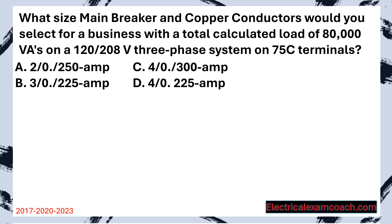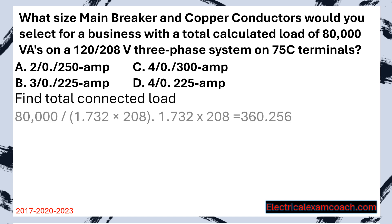What size main breaker and copper conductors would you select for a business with a total calculated load of 80,000 VAs on a 120-208 three-phase system on 75 degrees C terminals? Step one: find our total connected load. In this case, they've already given us the 80,000 VAs, but we have to do that little bit of pre-work first on all of our three-phase calculations, like we learned before.